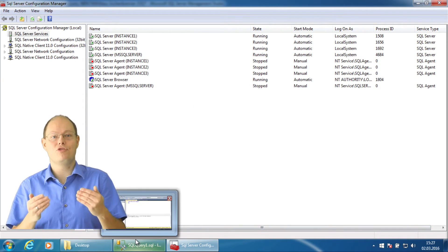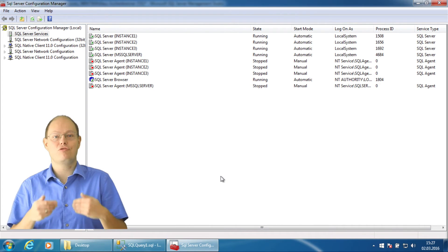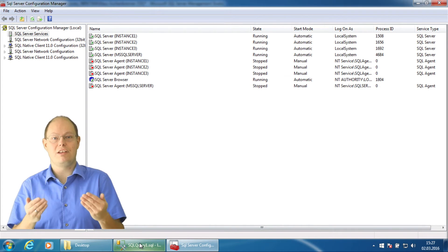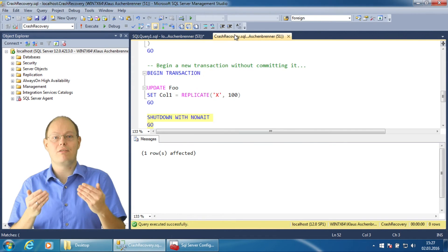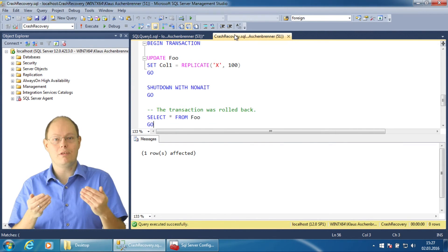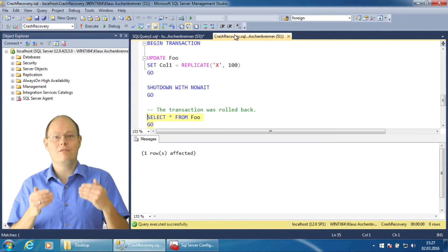As I have mentioned on the flip chart, the crash recovery consists of two phases: the roll forward and the roll back phase. During the roll forward phase, SQL Server replays transactions that were not yet persisted on our data files because the checkpoint process wasn't yet running.